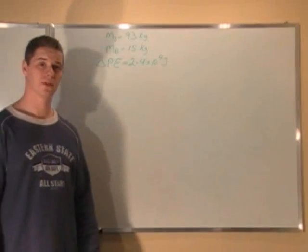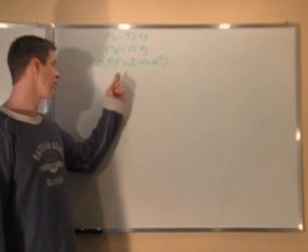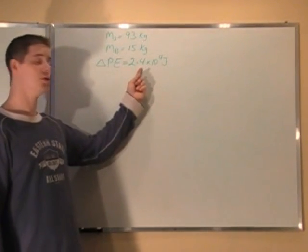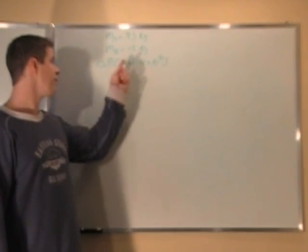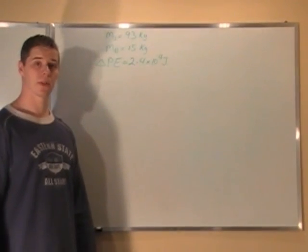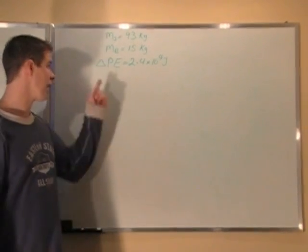A 93 kilogram student is in an elevator and goes up a certain amount of floors, and his gravitational potential energy increases by 2.4 times 10 to the 4 joules. Now, if he has a 15 kilogram backpack with him, how much does that gravitational potential energy of the backpack increase?